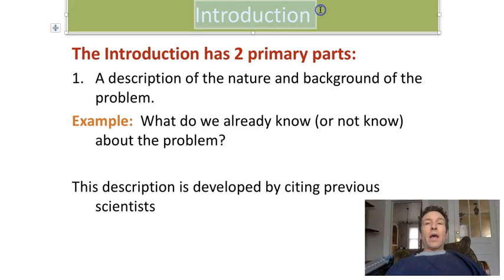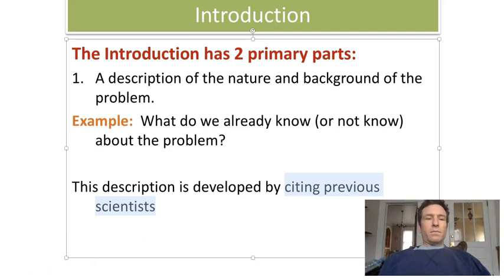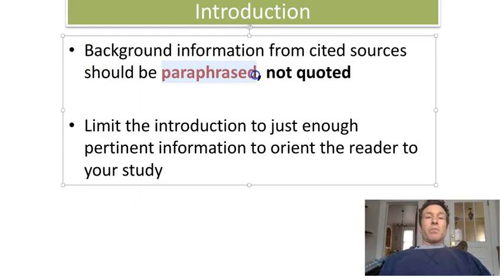Your first section will be the introduction, and the introduction has two primary parts. The first part is a description of the nature and background of the problem — in other words, you're telling the reader what is already known about the system or the question that we are investigating. Since you're telling the reader about things that are already known, you should cite previous work from other scientists in this section. The background information must be paraphrased — it should be in your own words. You should not use quotes. Generally in scientific writing, especially lab reports, we never use quotes.